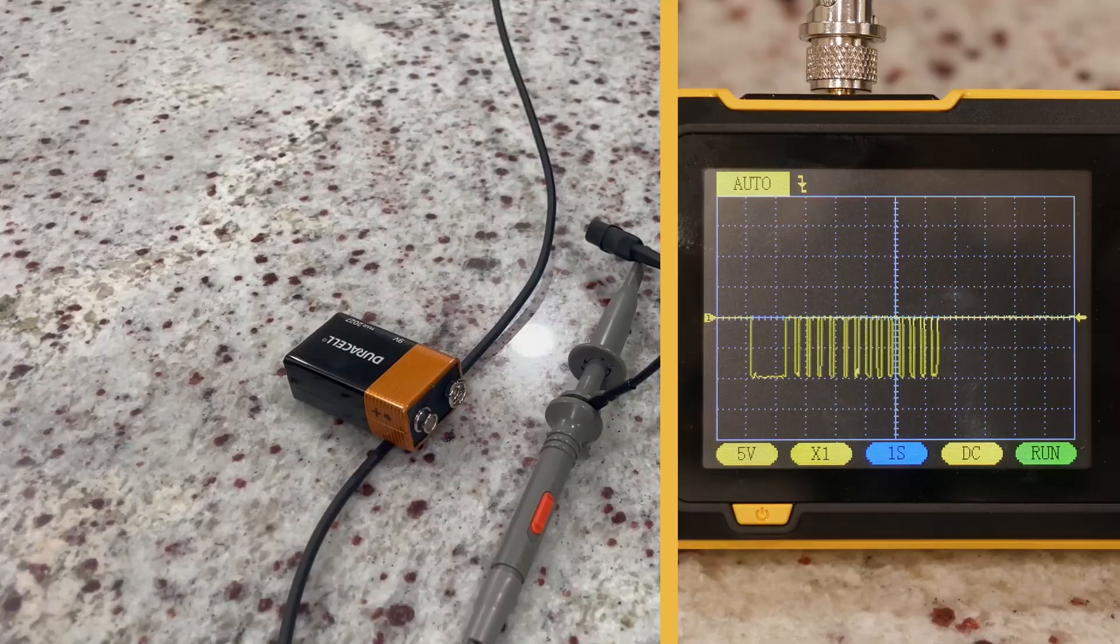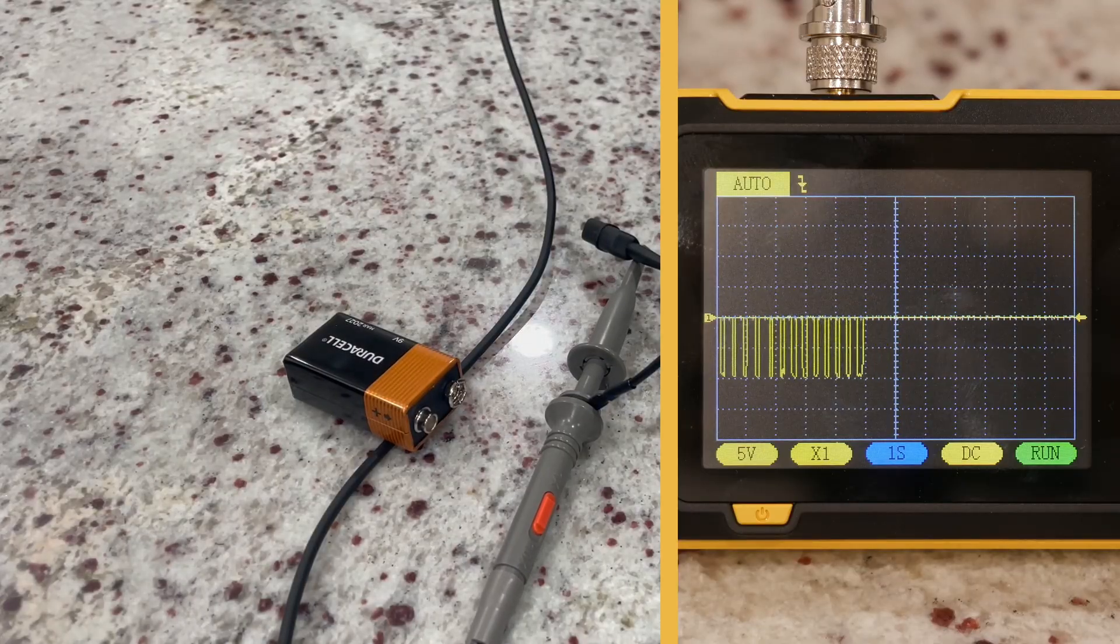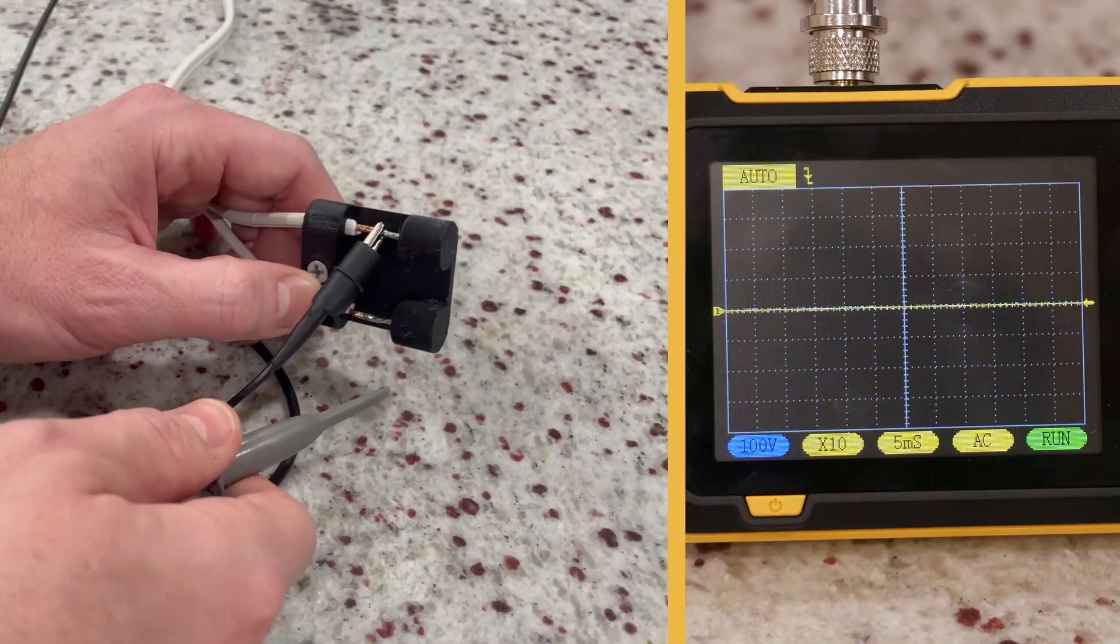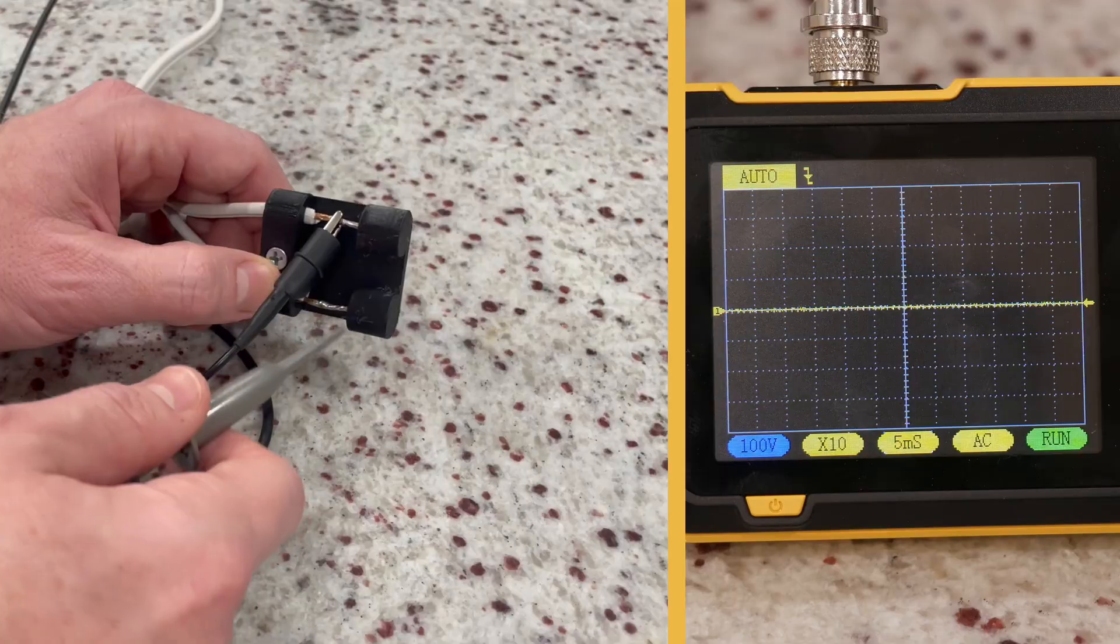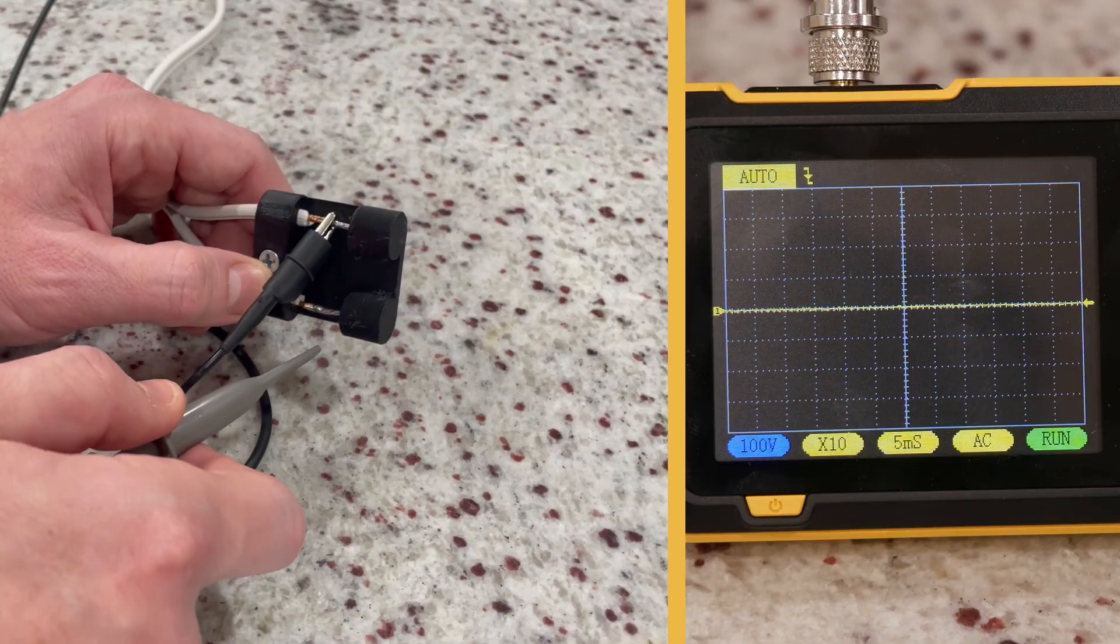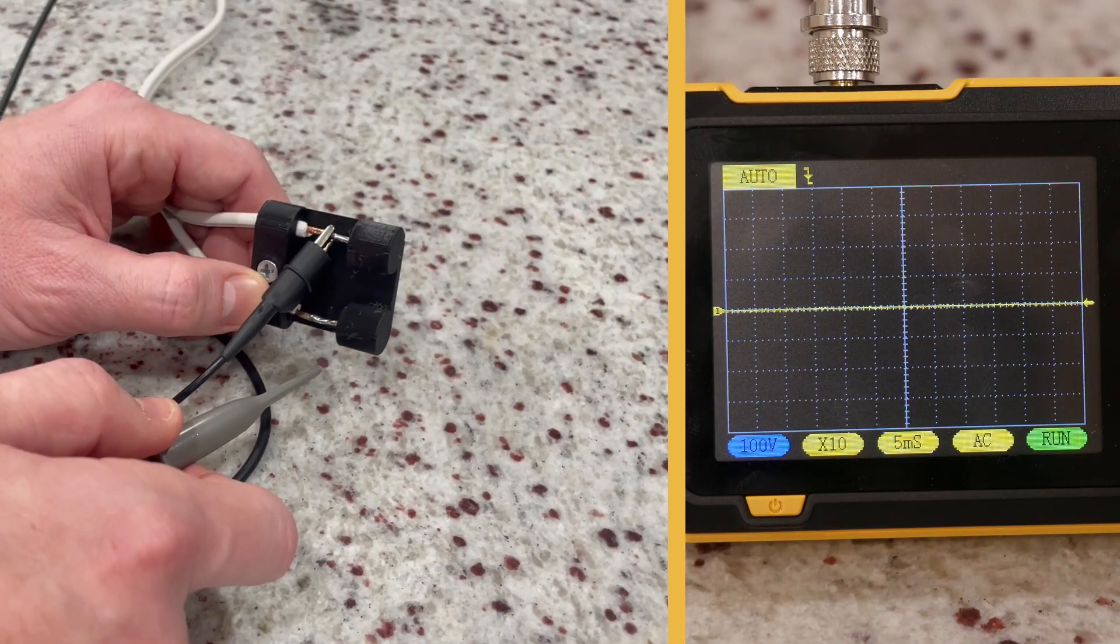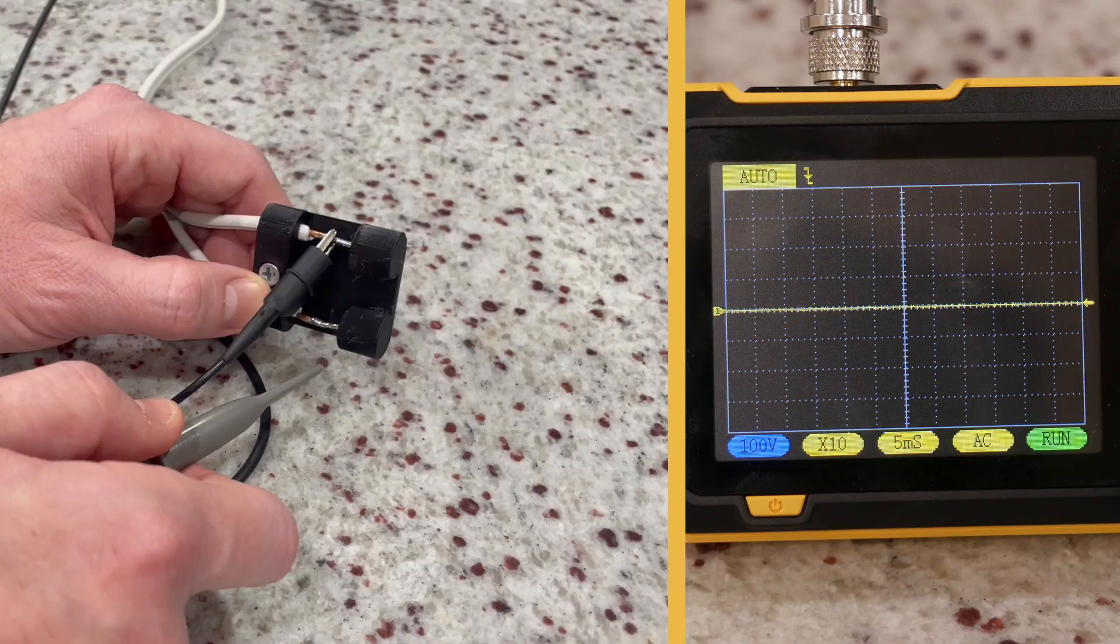It's also really useful for looking at AC power to see what kind of sine wave you have. So now I've got it hooked up to my home's electrical. I've switched it over to AC mode. I've changed the interval to 5 milliseconds.